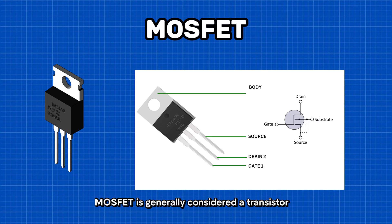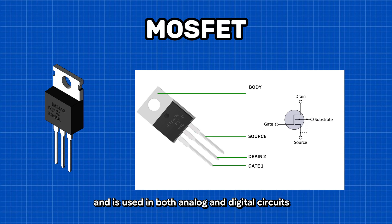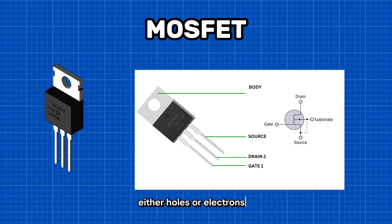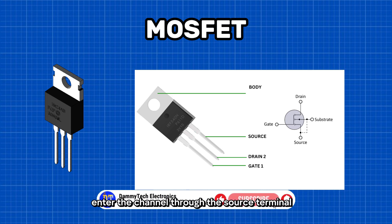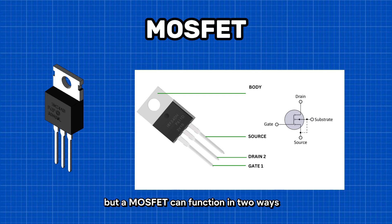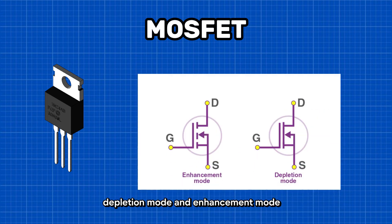A MOSFET is generally considered a transistor and is used in both analog and digital circuits. The functionality of a MOSFET depends on the electrical variations that occur in the channel width, as well as the flow of carriers, either holes or electrons. The charge carriers enter the channel through the source terminal and exit via the drain. A MOSFET can function in two ways: depletion mode and enhancement mode.